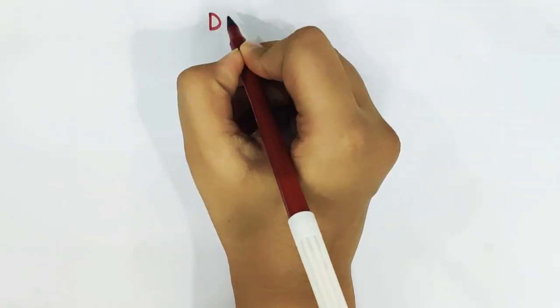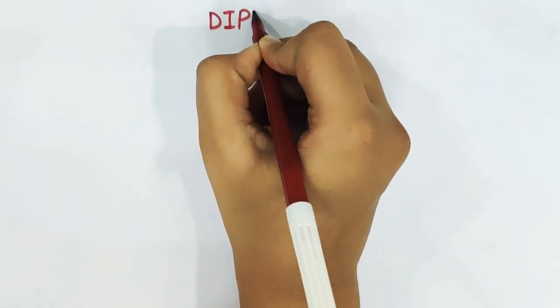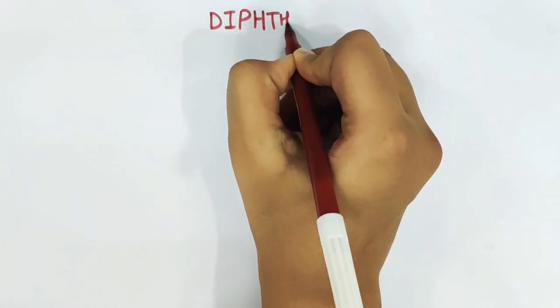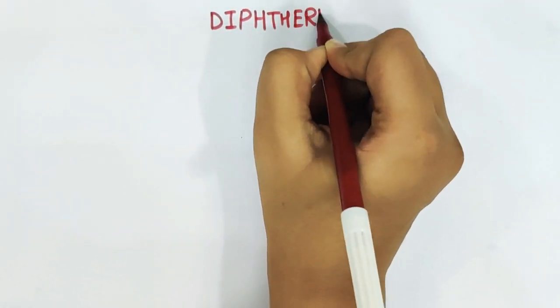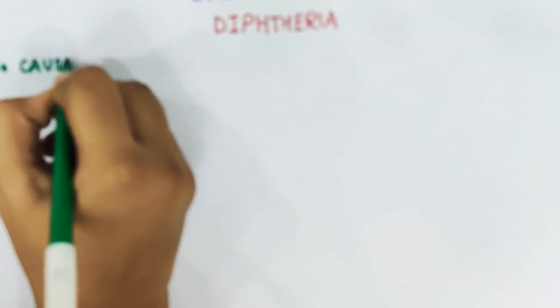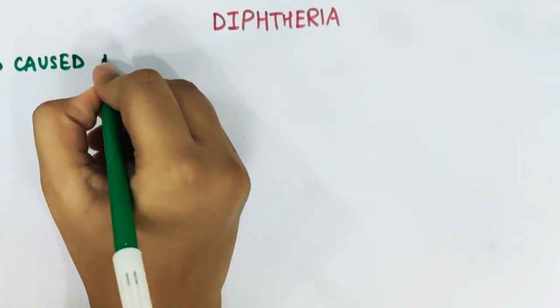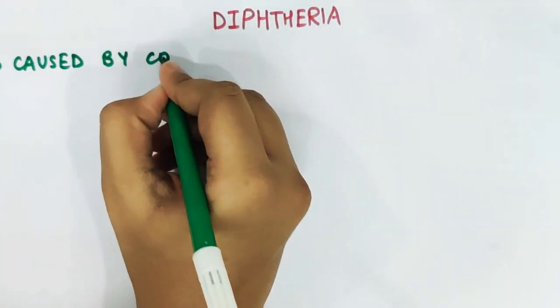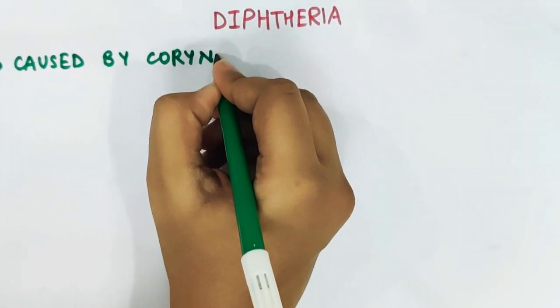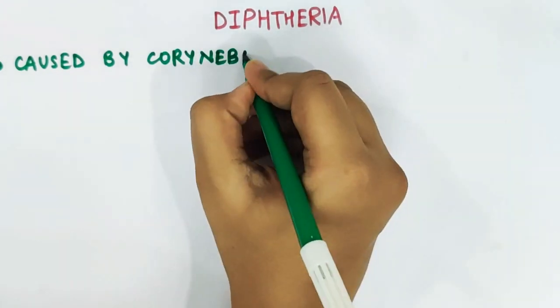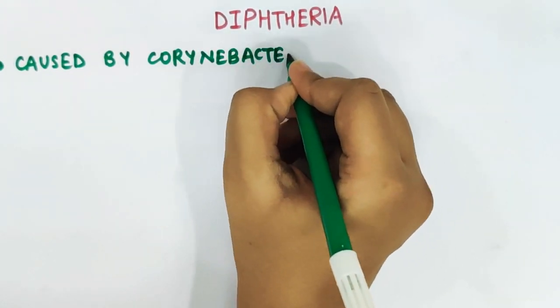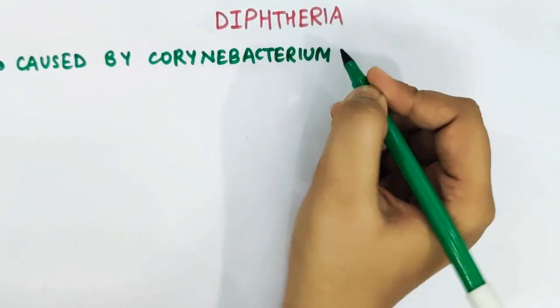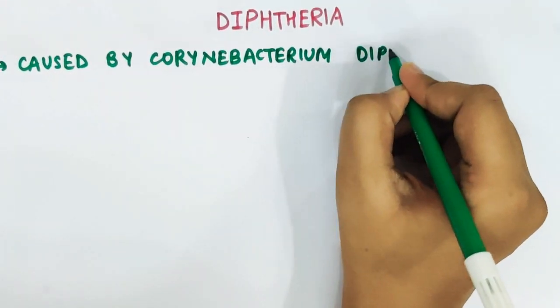Hi everyone, this is a short 2-minute video on the bacterial infection diphtheria. Diphtheria is caused by the bacteria Corynebacterium diphtheriae, which is an anaerobic gram-positive organism.